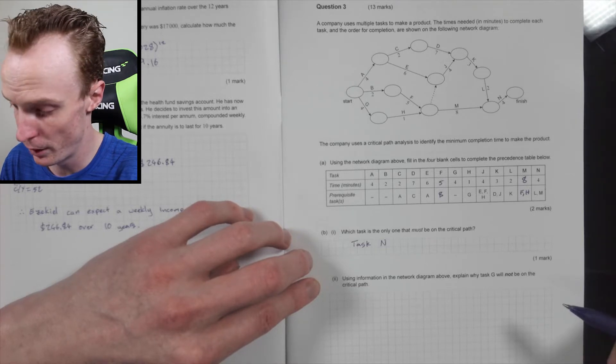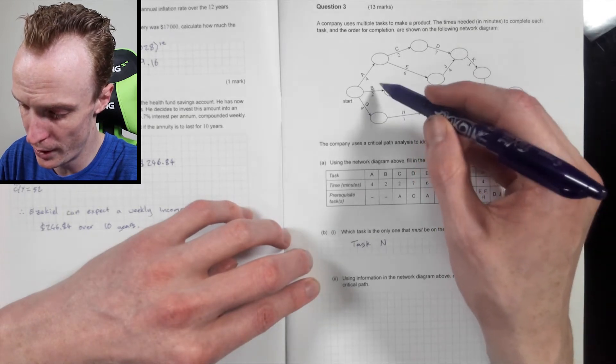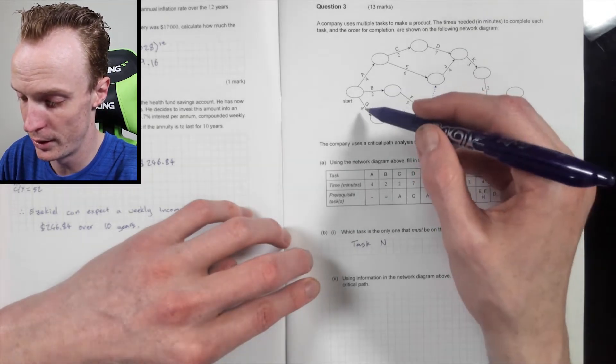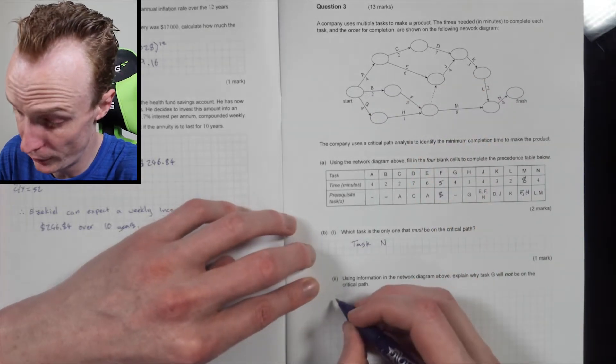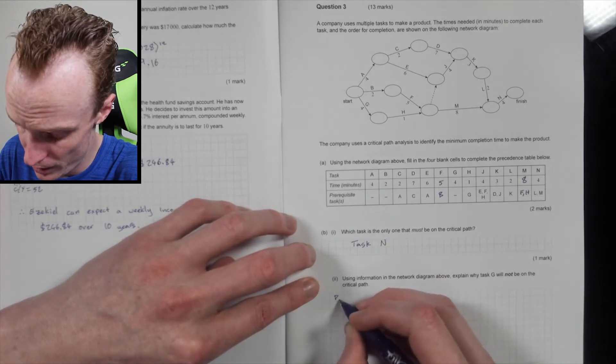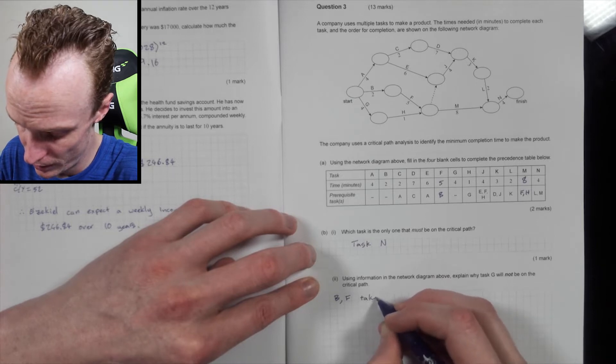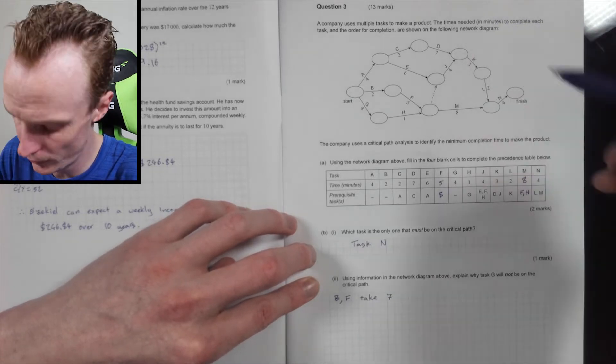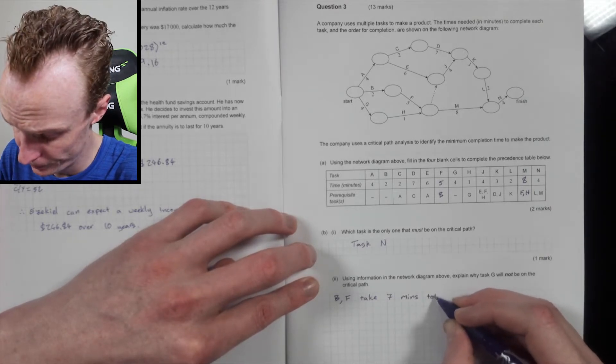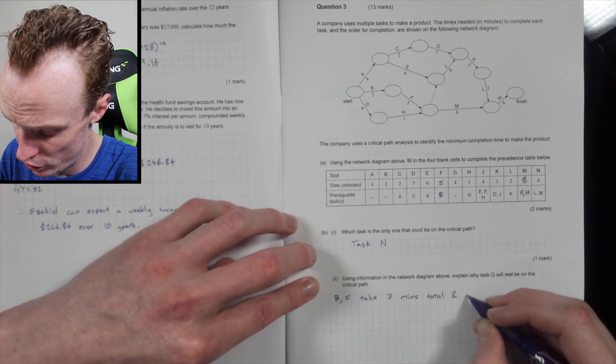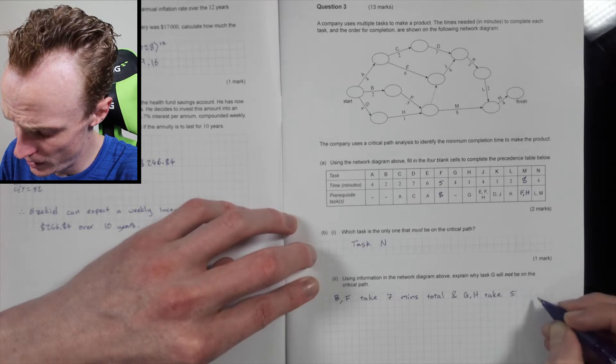Alright, so that's there and that's there. So 4 plus 1 will be 5. 2 plus 5 will be 7. So that's shorter than that, so this one's more critical than that, and that's basically what you're explaining. So B-F takes seven—what's my units here?—minutes, so mins total. And G-H takes five minutes total.